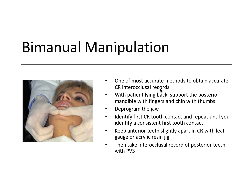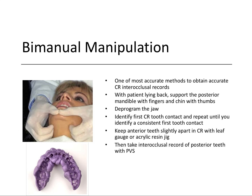One of the most accurate methods to obtain an accurate CR interocclusal record is with bimanual manipulation. The interocclusal record is made with either wax or polyvinyl siloxane (PVS) — a physical capturing of the relationship between the upper and lower teeth made with an elastomeric material. The patient bites into it, the material sets, and it later allows you to mount your diagnostic casts together in that same relationship.